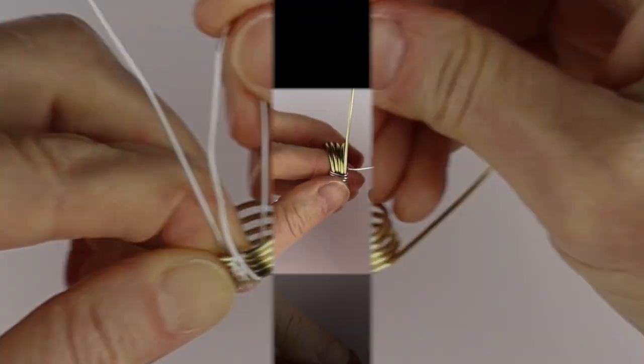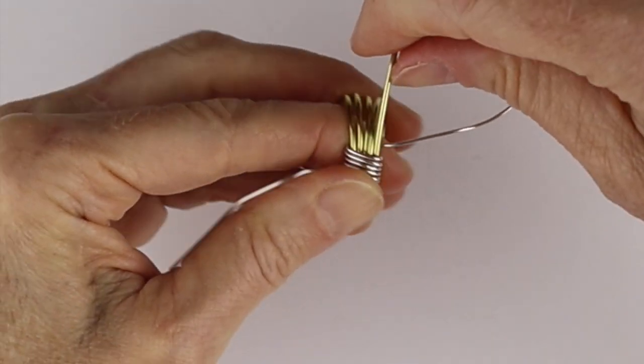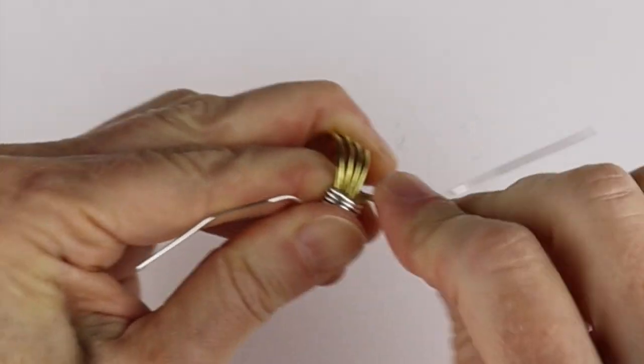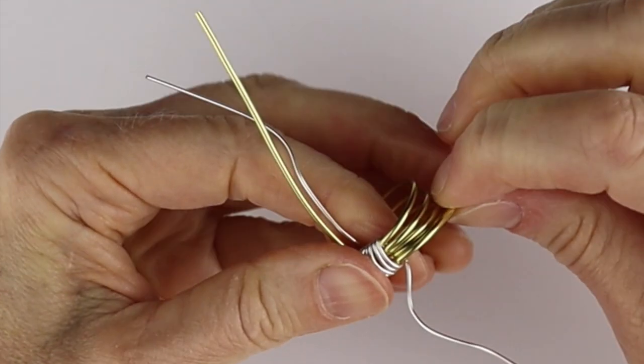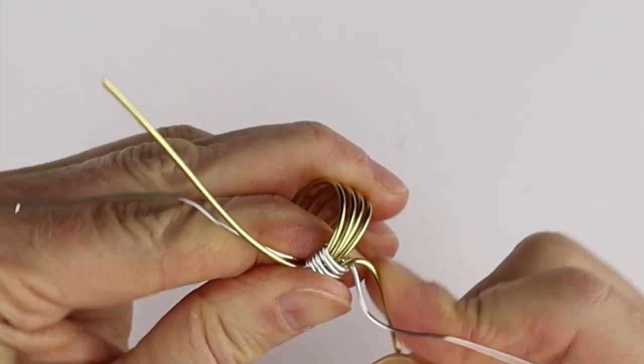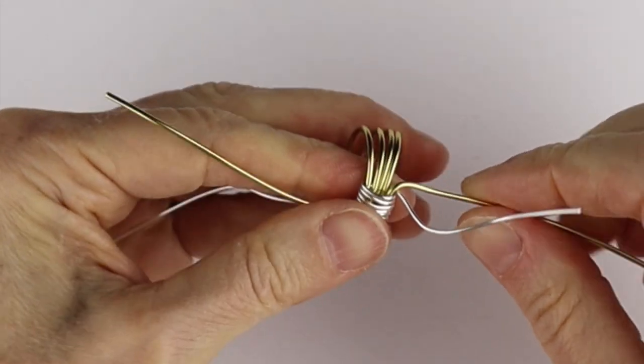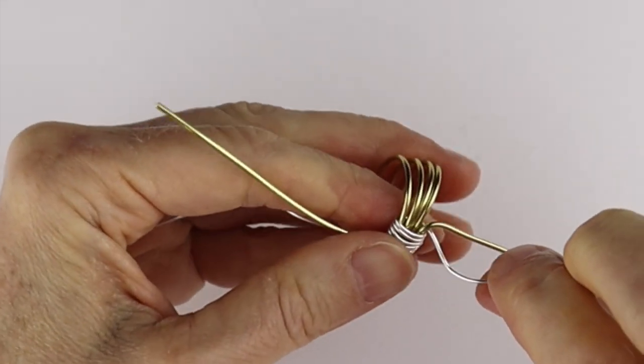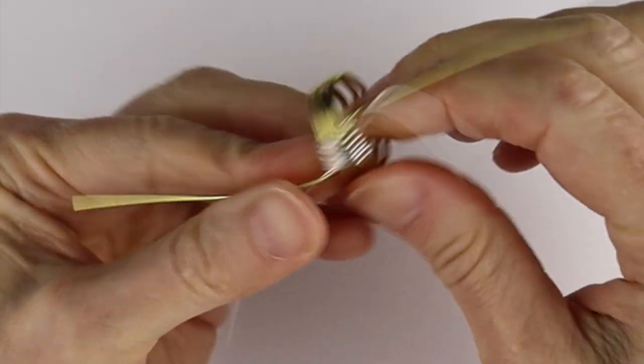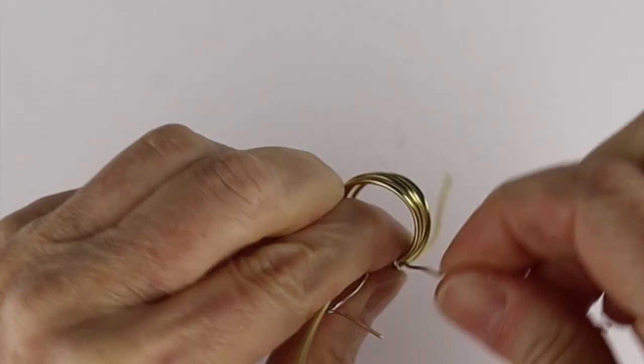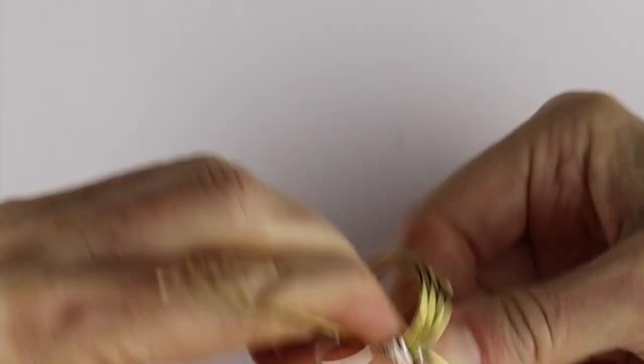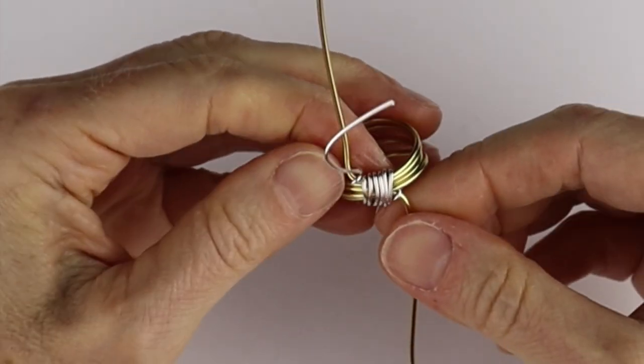Then what I want to do is I'm actually going to bend one of these up and then this one down, as I previously did. Then if you want this to be even more secure, you can wind that one around there and this one around here so you have it on either side.